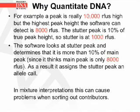When dealing with off-scale data — for example, a peak that is really 10,000 RFUs high, but the highest peak height the software can detect is 8,000 RFUs — the stutter peak, which is 10% of the true peak height, will be at 1,000 RFUs. The software looks at the stutter peak and determines that it is more than 10% of the main peak, because the software thinks the main peak is only 8,000 RFUs. As a result, it will assign the stutter peak an allele call, and in mixture interpretations, this can cause problems when trying to sort out contributors.